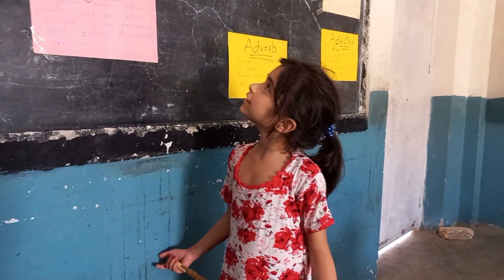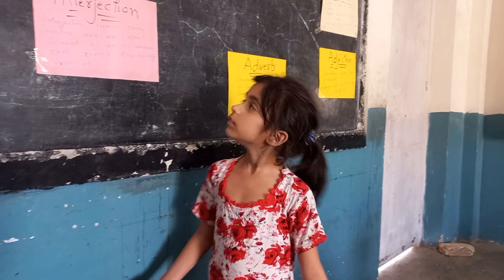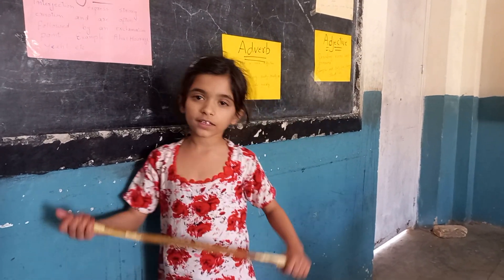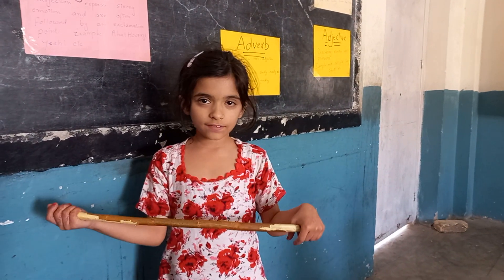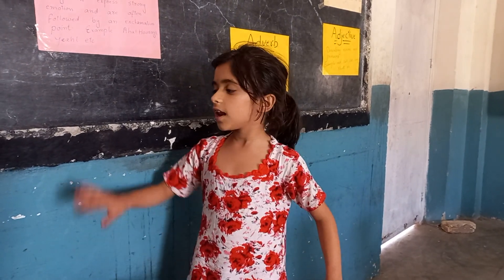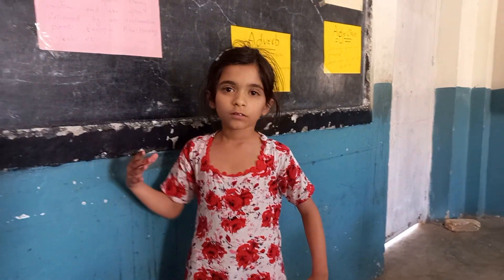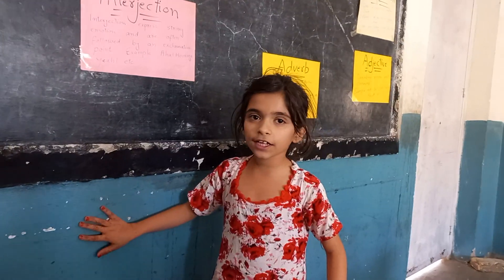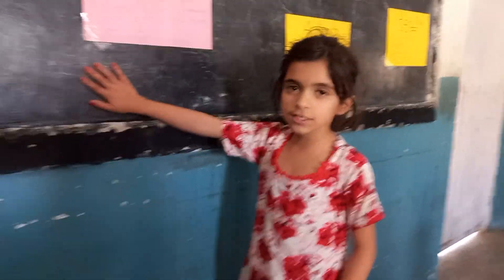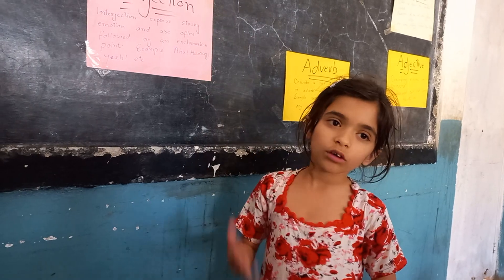Give me some examples of a noun. I have a stick — stick is a noun. Like this is a wall, this is a wall. Platform is a noun.